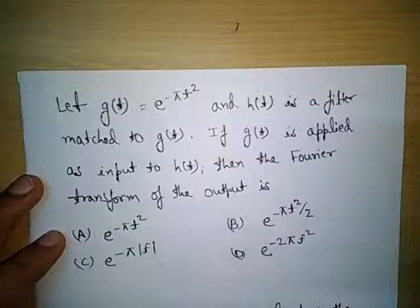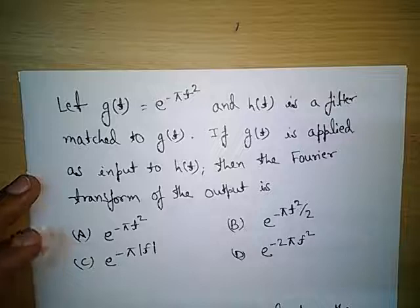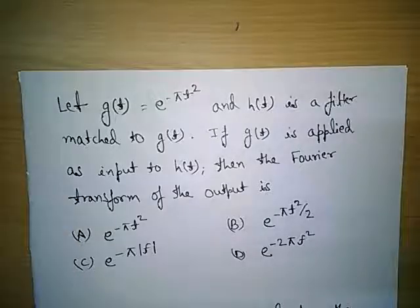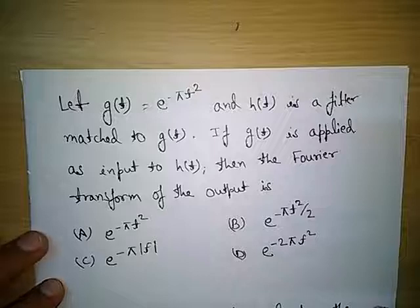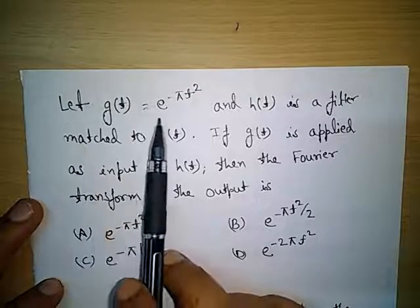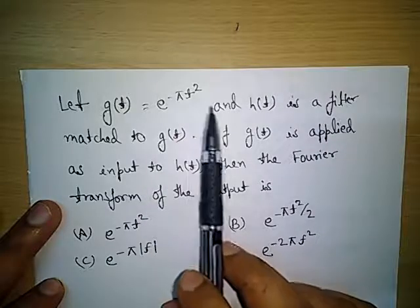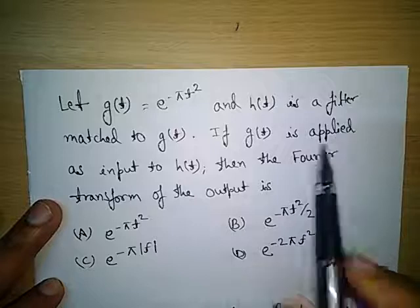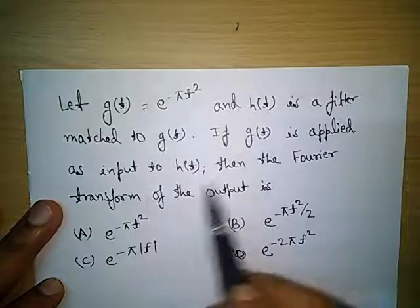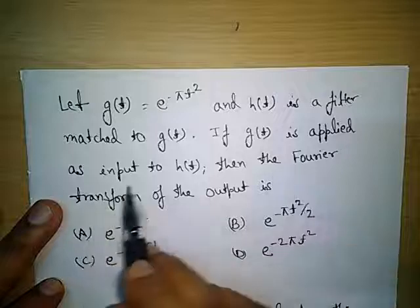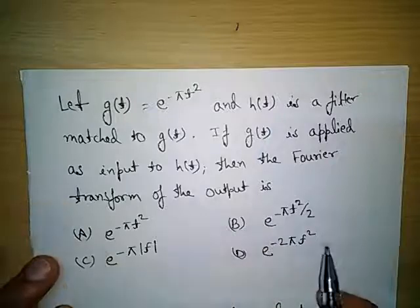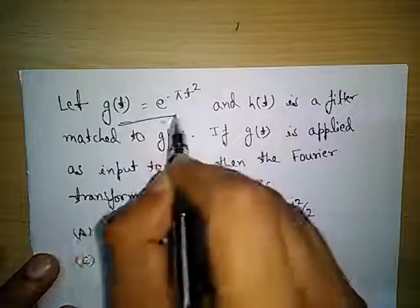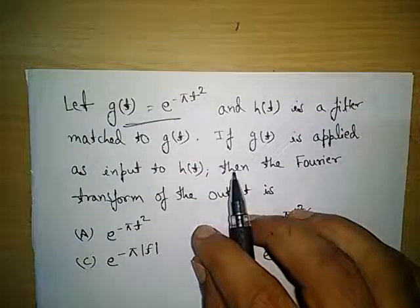In this video we will learn the concept of matched filter and also go through some derivations and understand how we can tackle this type of problem. The question is: let g(t) = e^(-πt²) and s(t) is a filter matched to g(t). If g(t) is applied as input to s(t), then the Fourier transform of the output is — and these are the options.